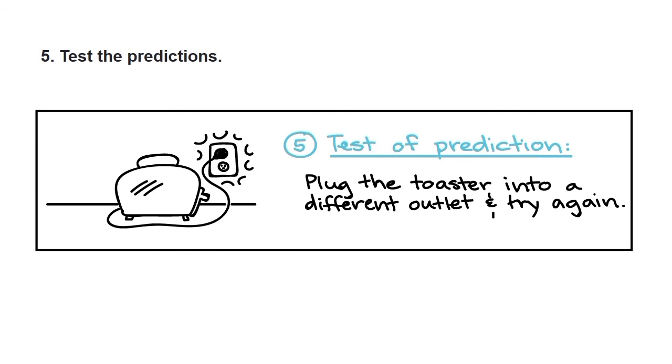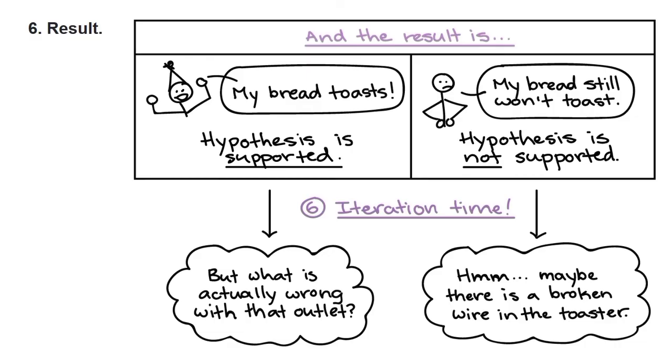Test the predictions. For the testing of the prediction, we plug the toaster into a different outlet and try again. The result will be: my bread is toast, which means the hypothesis is supported. If bread still won't toast, then the hypothesis is not supported. So the iteration time will be: